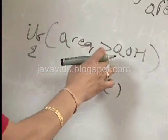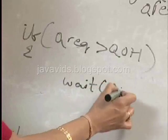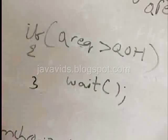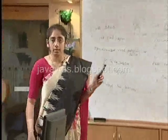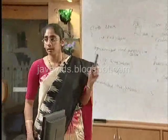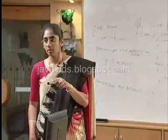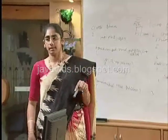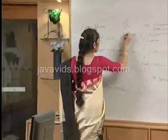If quantity required is greater than quantity on hand, we call wait. The wait method puts the consumer thread into a wait pool by releasing the lock on the object. So it releases the lock and goes to the wait pool.